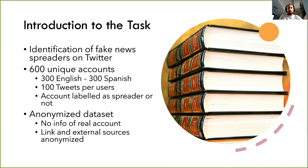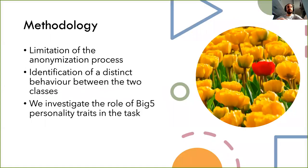We want to highlight the fact that the dataset is anonymized, so we have no information about the real account or other external information such as URLs, mentions, or retweet information. All of this external information that could help us link spreading activity is anonymized. Given this, we thought that the goal of the organizers was to understand a pattern in the tweets of a spreader, rather than to detect a fake news item from an individual tweet point of view.